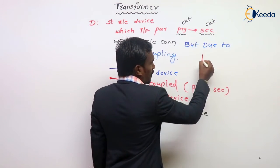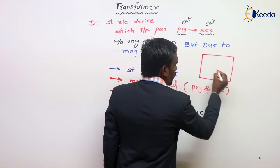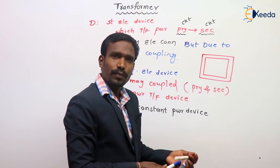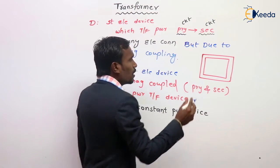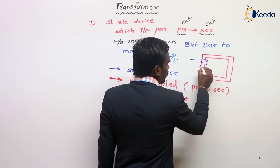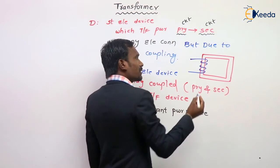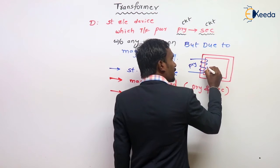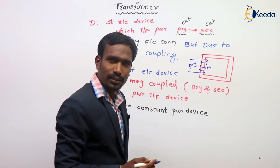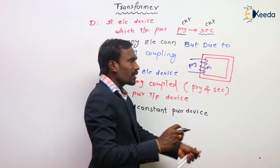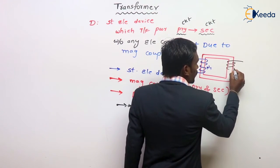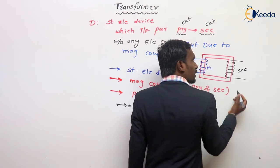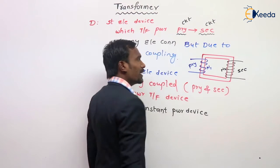See here, for example. This is my transformer. This is the transformer core. On this transformer core we have windings — two types of windings. One is called primary winding, which has N1 number of turns. On the other side I have a winding called secondary winding, which has N2 number of turns.